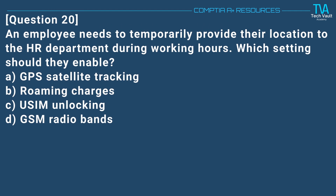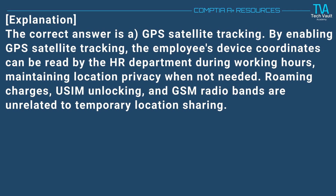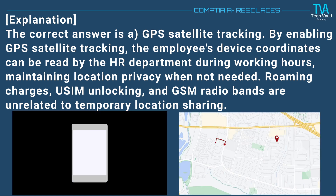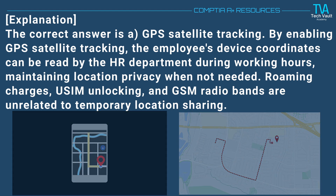Question 20. An employee needs to temporarily provide their location to the HR department during working hours. Which setting should they enable? A. GPS satellite tracking. B. Roaming charges. C. USIM unlocking. D. GSM radio bands. The correct answer is A. GPS satellite tracking. By enabling GPS satellite tracking, the employee's device coordinates can be read by the HR department during working hours, maintaining location privacy when not needed. Roaming charges, USIM unlocking, and GSM radio bands are unrelated to temporary location sharing.